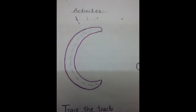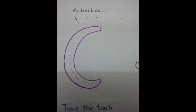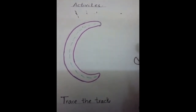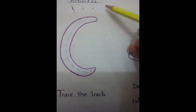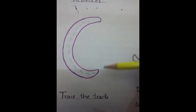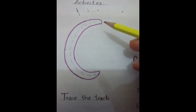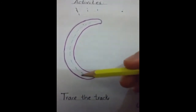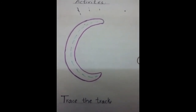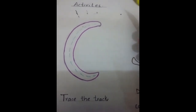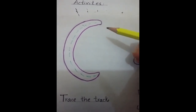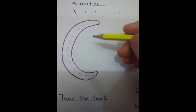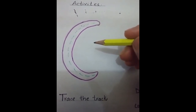Now we will do some kinds of activities here. First, you can see this letter — this is a small c. Here you can see a track inside this letter. Small c looks like a moon — like a half moon. Did you see a half moon? We see moon and stars in the sky at night. Moon and sky are created by Allah for us, so we should be thankful to Allah for them.